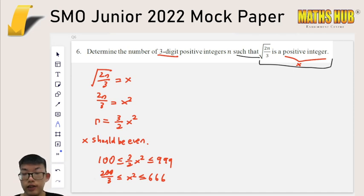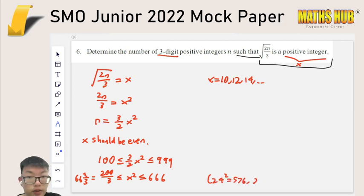Now, 200 over 3 is 66 and 2 thirds. So we can now say, well, I know what values of x will work. 8 squared is too small, so we must start with 10. And we continue until the closest even square number to 666, which you would see is actually 24 squared. 24 squared is 576. 26 squared, the next even number is 676. So you do have a little bit of calculation to do here, but you know that it's going to be 20-something. So you find the closest one, and it goes from 10 to 24.